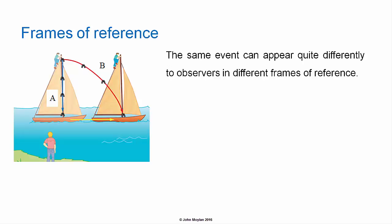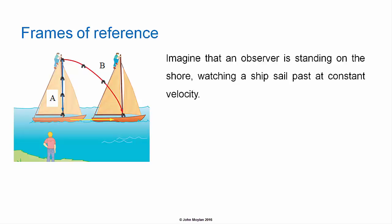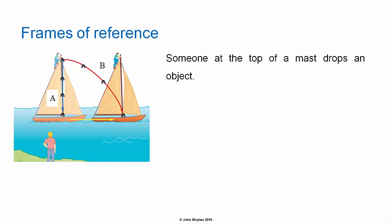Frames of reference. The same event can appear quite differently to observers in different frames of reference. Imagine that an observer is standing on the shore watching a ship sail past at constant velocity. Someone at the top of a mast drops an object, in this case a pair of binoculars.